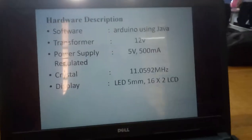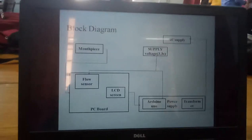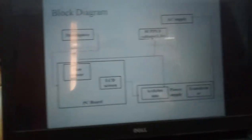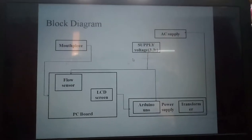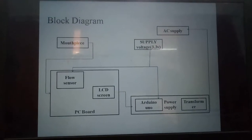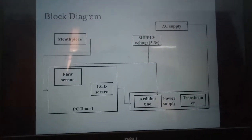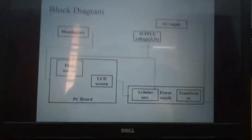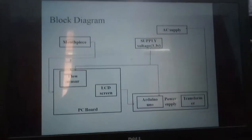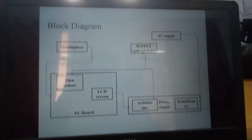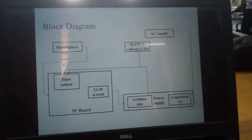And a liquid crystal display, meaning an LCD display. Next, block diagram. This is our main block diagram of the project. It uses AC supply — 230 voltage AC supply — which is converted by a transformer, the 12V transformer. The 12V voltage is then stepped down because we used 3.3V.